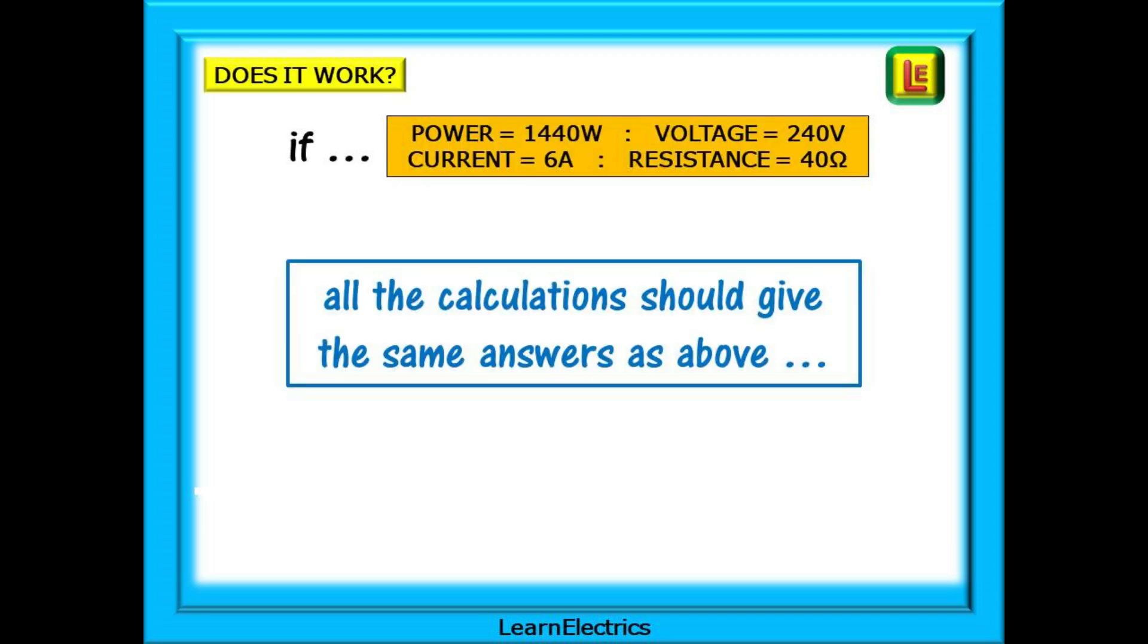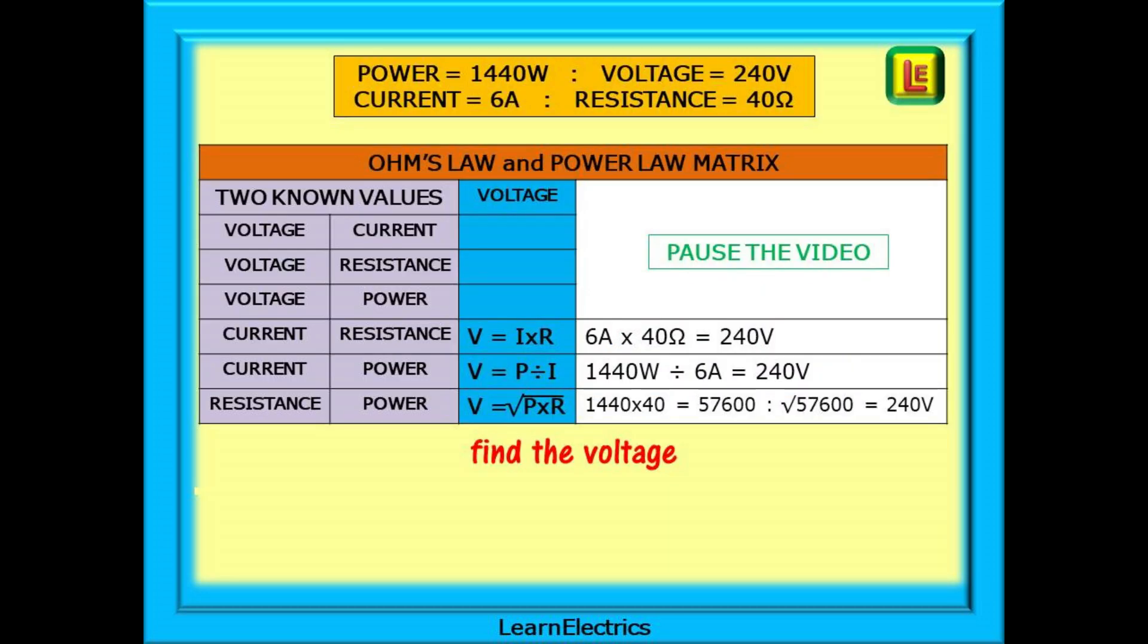The big question is, does it work? If we make all the possible combinations of calculation, will it always give us the correct answer? We can begin by giving you all four values and then work through the table using just two values at a time. If all is good, then all the calculations should give the same answers as above. These expected answers will be repeated on each slide so that we can check each one. My suggestion is that you pause the video on each slide and have a go at doing the calculations yourself. Practice and repetition really is the way to learn these.